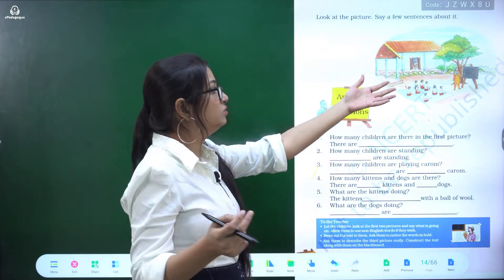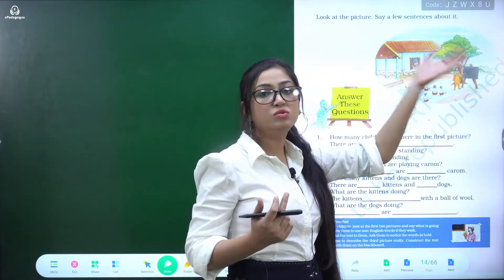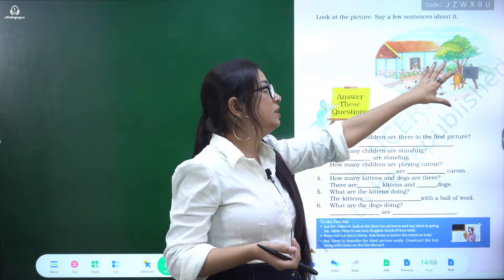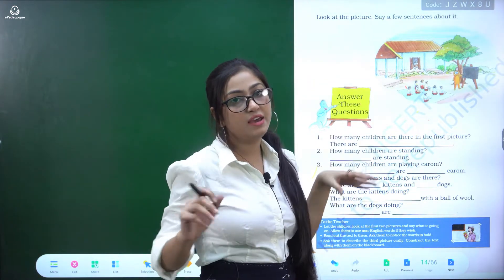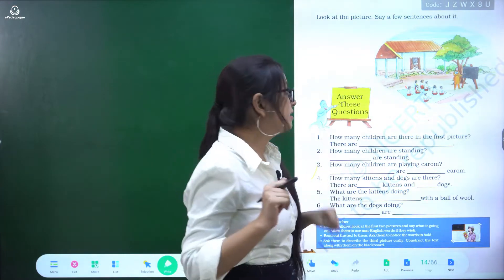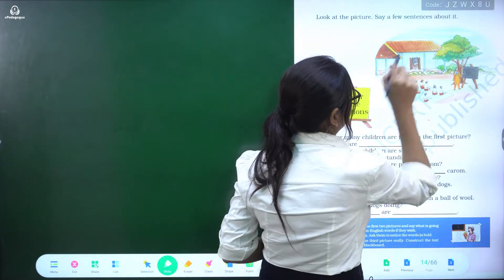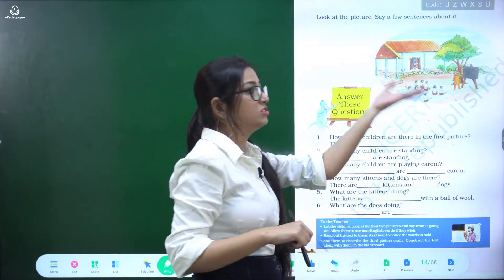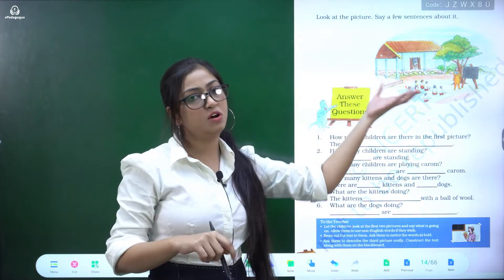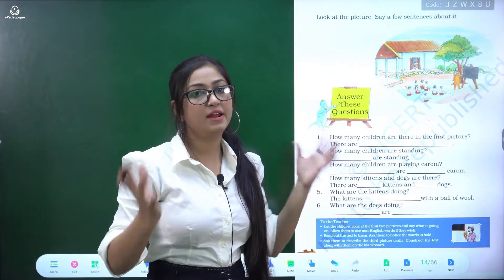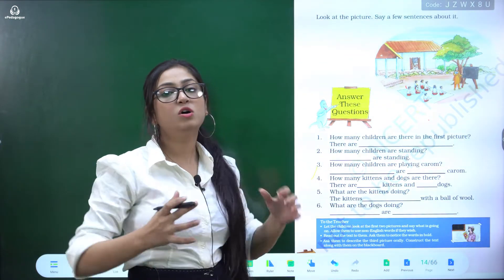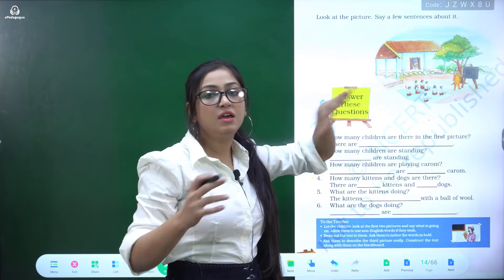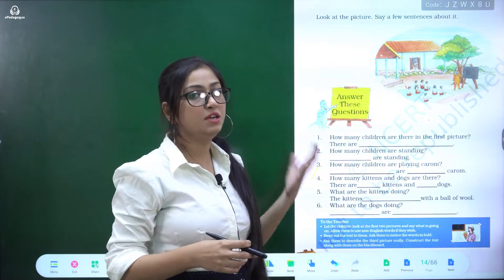There is a house in front of a tree. There is also a tree and small plants. So in this picture: children are studying outside, the teacher is teaching them outside, and there is a house in front of them.